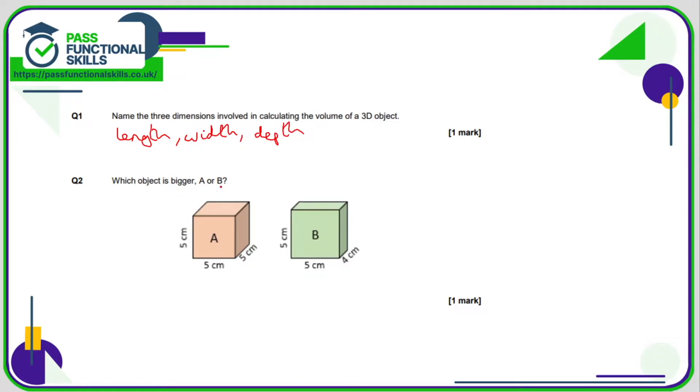Question two, which is bigger, A or B? So that means which one has the greater volume. Well, the volume of A is going to be 5 times by 5 times by 5, whereas B is going to be 5 times by 5 times by 4. And since 4 is less than 5, then B will be smaller than A, so therefore the bigger object will be object A.